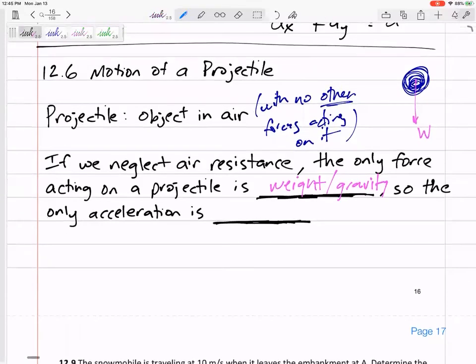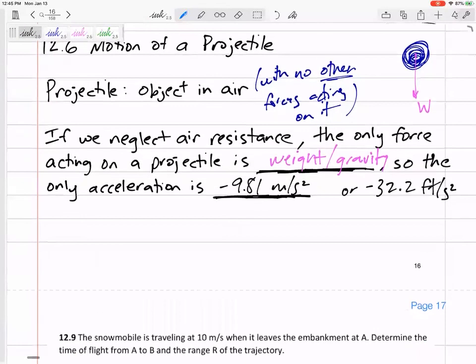So the only acceleration is negative 9.81 meters per second squared. I'm saying negative just because nine times out of ten, we're going to say up is positive. I'm not afraid to use English units. So 32.2 feet per second squared if we're in English units.